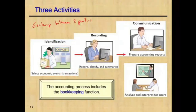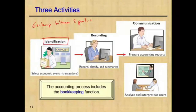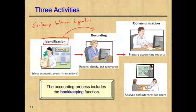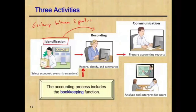As accountants, we need to first identify — figure out what's going on. When we find out that we are purchasing a computer, the next thing we do is record. Simply put, write it down in a system — record the transaction. We're going to learn how to properly record transactions using a system called debits and credits, which we'll cover later.